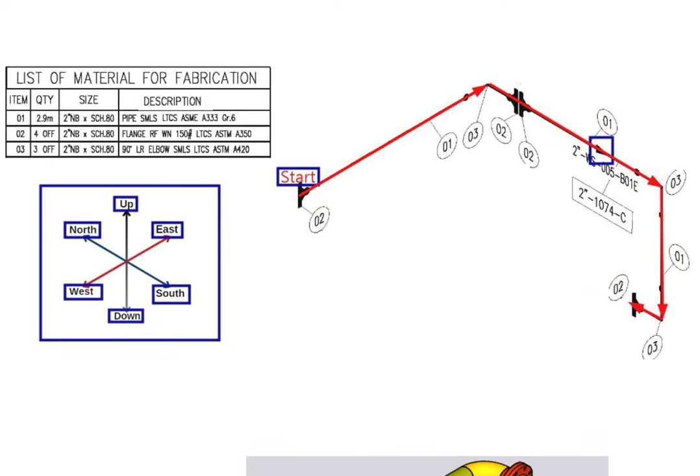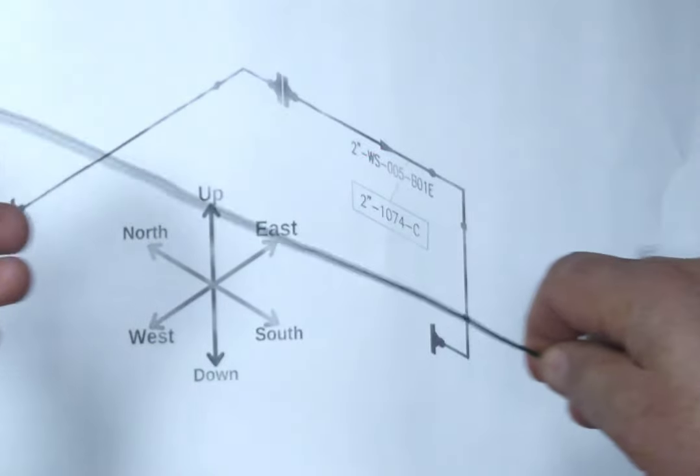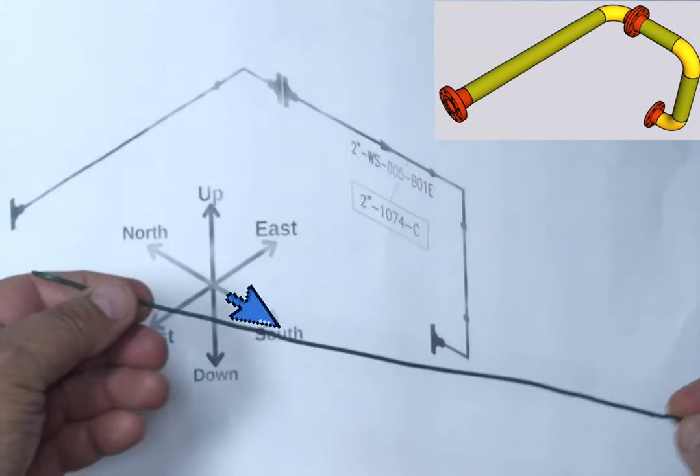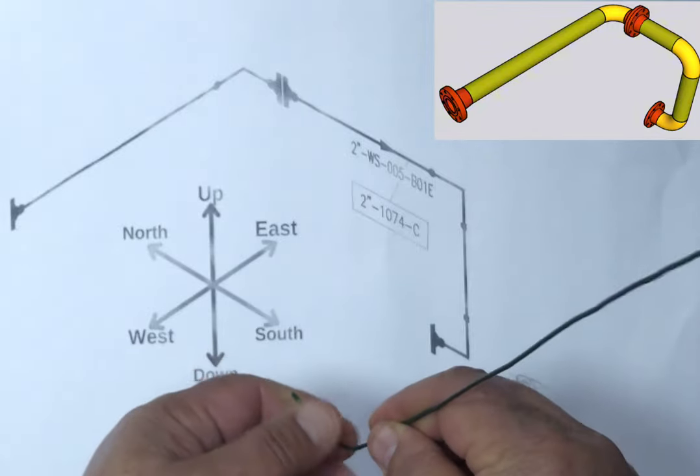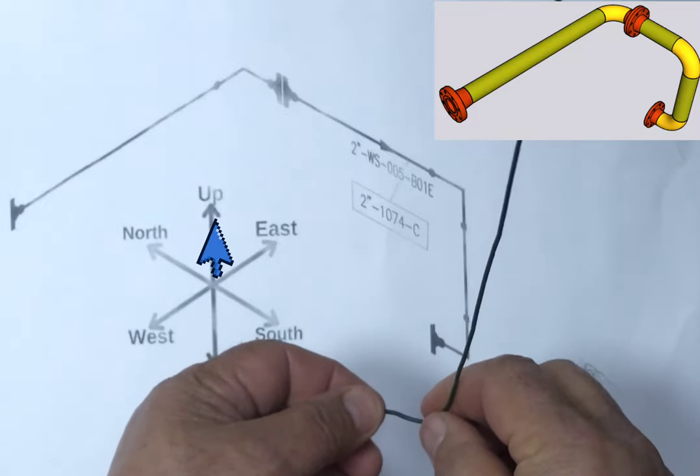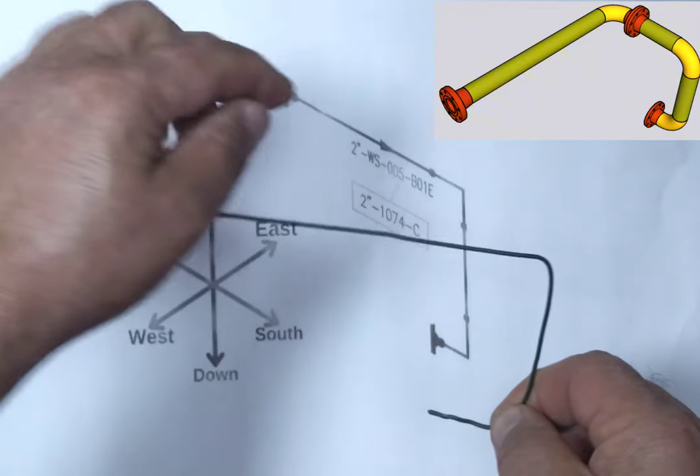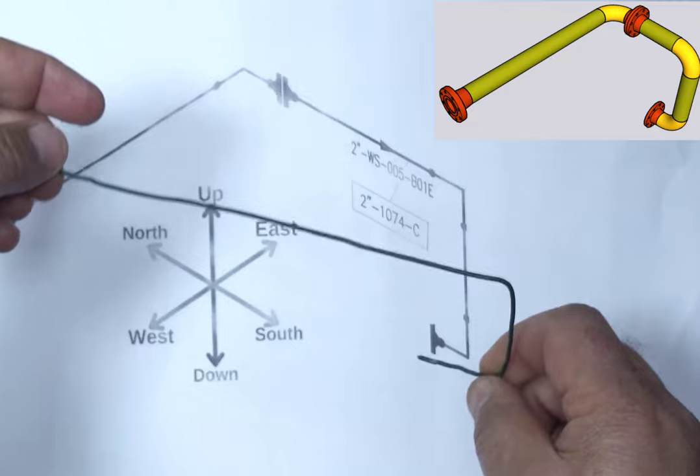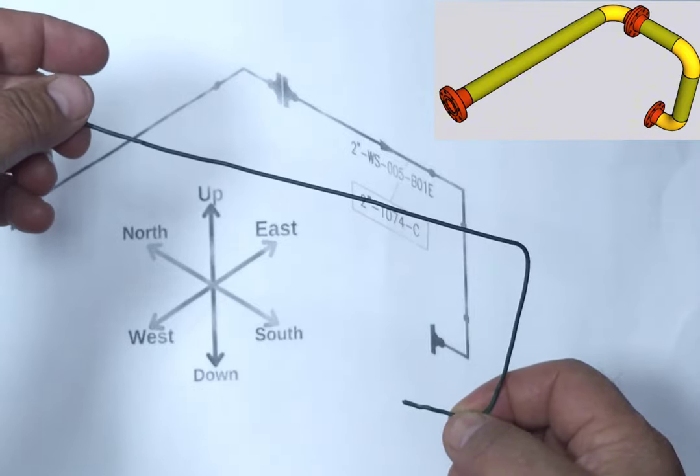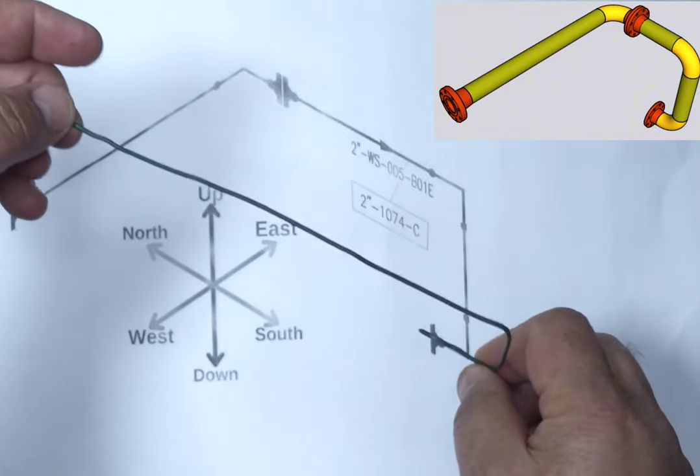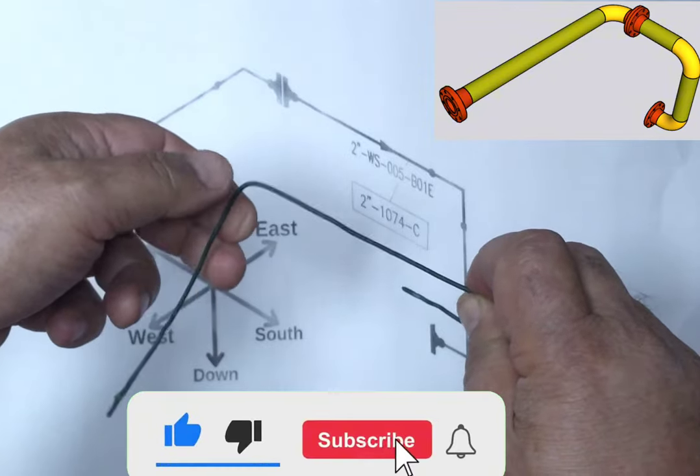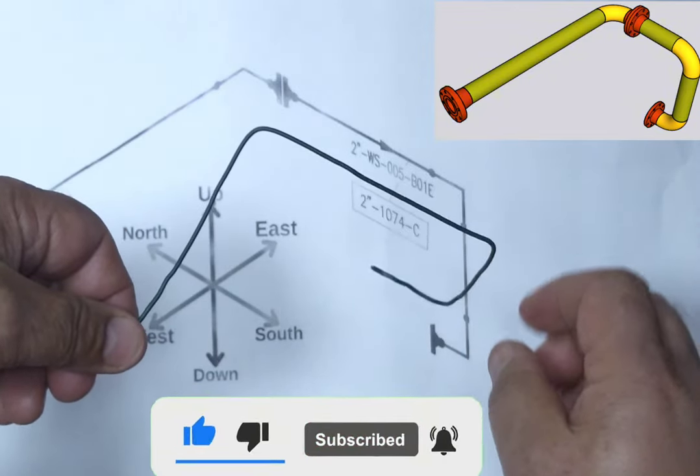Now let's bend the wire of this pipeline. The wire bending process is the same as the isometric reading process. We hold the wire in a south direction. Here we bend the wire at an angle of 90 degrees to the up. Then, we bend the wire north at an angle of 90 degrees. And finally, we bend the wire to the west. A small model of the pipeline bent from wire is ready.